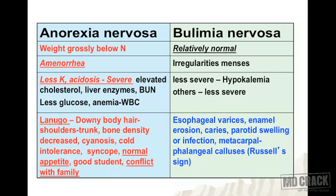Physical characteristics of anorexia nervosa include lanugo (downy body hair on shoulders and trunk), decreased bone density, cyanosis, cold intolerance, history of syncope, and normal appetite. These patients tend to be good students with family conflicts. In bulimia nervosa, findings include esophageal varices, enamel erosion and caries, parotid gland swelling or infection, and metacarpophalangeal calluses from repeatedly inducing vomiting — known as Russell's sign.